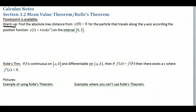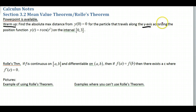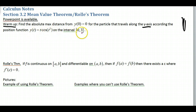What we want to do is find the absolute maximum distance from y(0) = 0 — so this just means the point (0, 0) — for the particle that travels along the y-axis. We're going to be going up and down according to the position function y(t) = t·cos(t²) on the interval from 0 to 3.